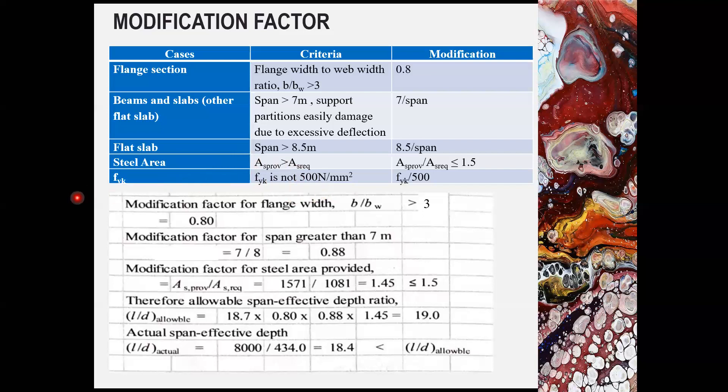So modification factor for flange width, the b divided by bw in this case is greater than 3. Therefore 0.8 modification factor shall be used. And the length for the beam, the span AB is 8 meter and is greater than 7 meter. Therefore modification factor 7 divided by 8 shall be used.